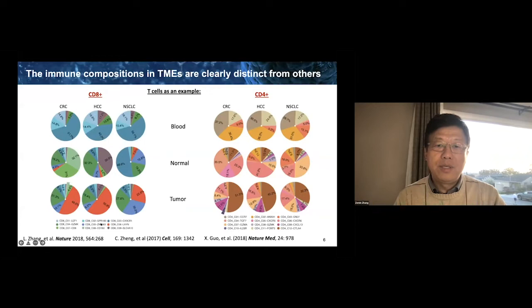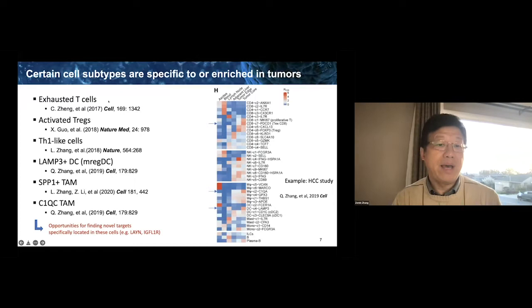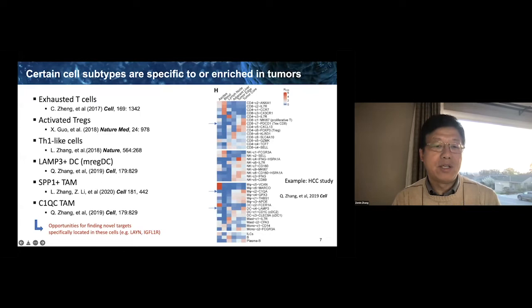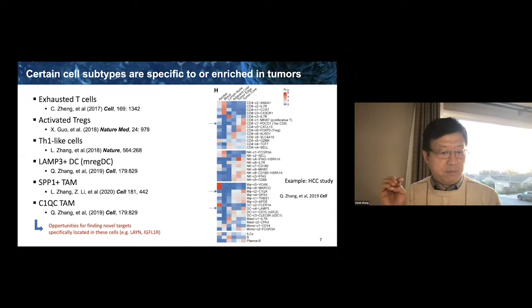From those analyses, you can identify different immune cell types that seem to be specific or enriched in tumors. Exhausted T-cells are heavily enriched in tumors. In addition, we also see activated T-regs, TH1-like cells, and LEM3-DC — which I believe is what Marianne called MREG-DC. We also have SPP1-plus tumor-associated macrophages. All those cells have a very preferential or specific presence in tumor locations, providing great opportunities to find novel targets because they are doing something special in tumor, either providing pro-tumor function or pro-inflammation.